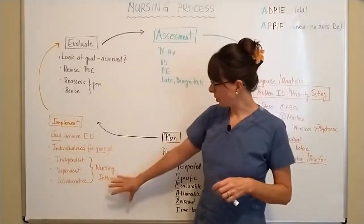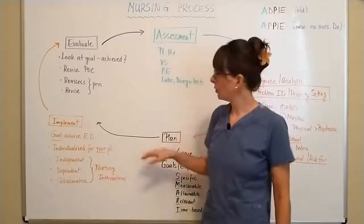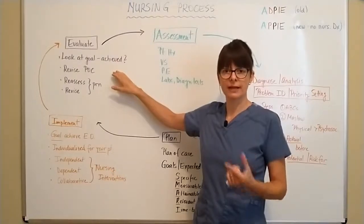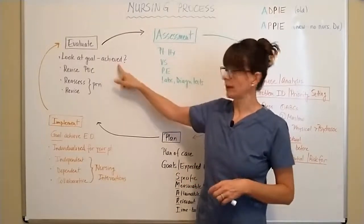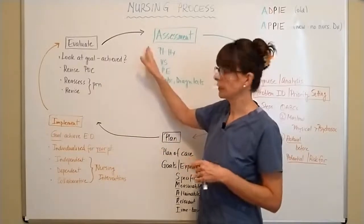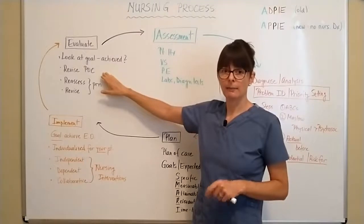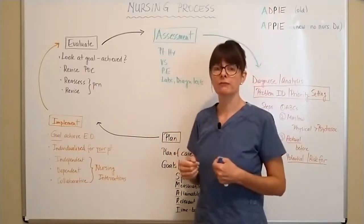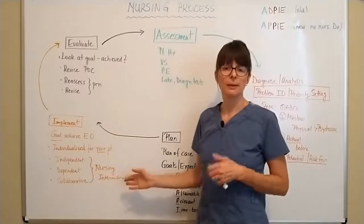Once we have implemented our interventions — following two, three, four, or five different interventions to achieve our goal — we evaluate. We look at the problem we identified and the plan we developed: have we achieved the goal? If yes, great — goal achieved, move on, re-evaluate, and reassess the patient to see what else to focus on. Revise the plan of care whether you've achieved the goal or identified that a change is needed. If you didn't achieve your goal with the interventions implemented, you go back, reassess, and revise as needed.